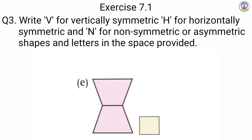Next is E — we have a figure like a sand clock. It is cut from the horizontal line of symmetry, so we write here H.